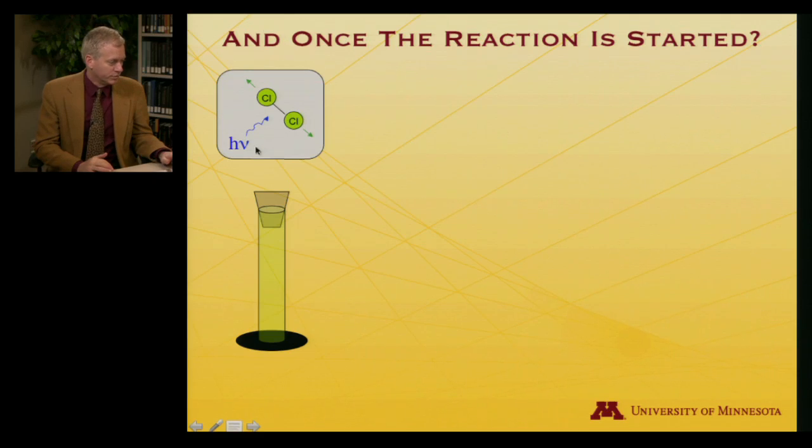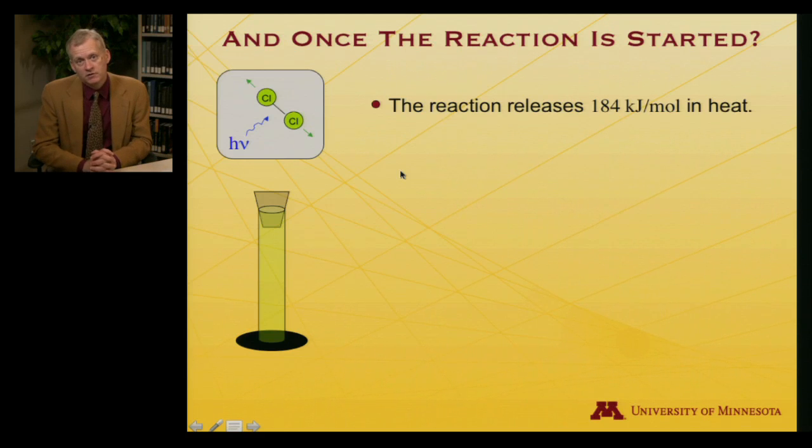All right. So you've correctly ascertained, presumably, that it's blue light that has enough energy, more than 242 kilojoules. But now what? The reaction's started. So we've come in here with our little blue photon, our little packet of energy, h nu, and it hit the chlorine. The chlorine gas absorbed it. It blew the atoms apart. And the net result, after it reacts with a hydrogen molecule, is to release 184 kilojoules per mole.